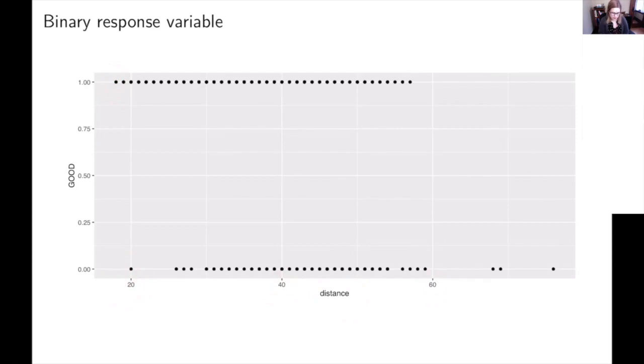But I think the main thing to take away from this is that there's some variability in the distance for the kicks that were good, and there's also some variability in the distance of the kicks that were not. And we want to try and model, we want to be able to predict is someone going to be able to make the kick or not based on the distance.